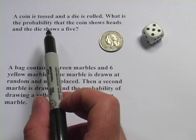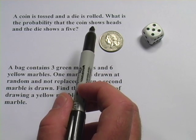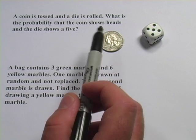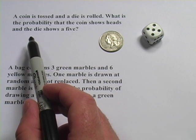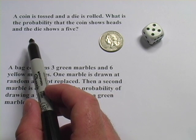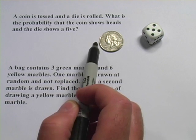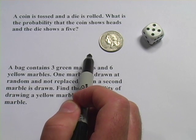Let's look at this first problem. It says a coin is tossed and a die is rolled. What is the probability that the coin shows heads and the die shows a 5? So these are two different events, and the first step is to figure out what's the probability of each event individually.